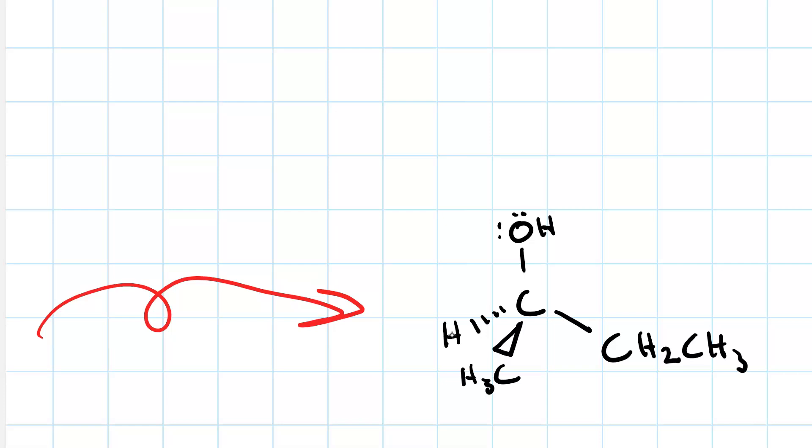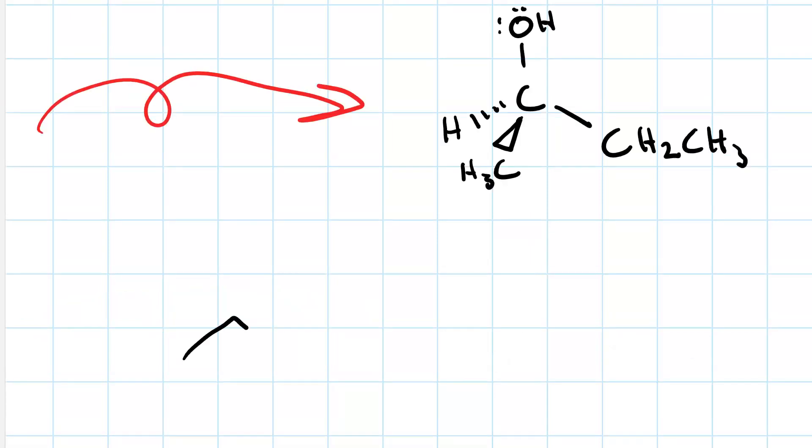So now when it comes to bond line structures, the bond line structure of 2-butanol looks like this. Here's your methyl group, here's your ethyl group.